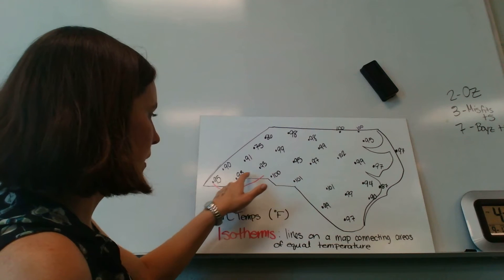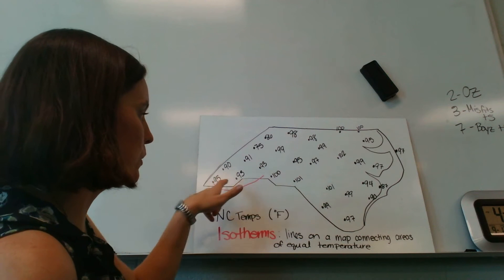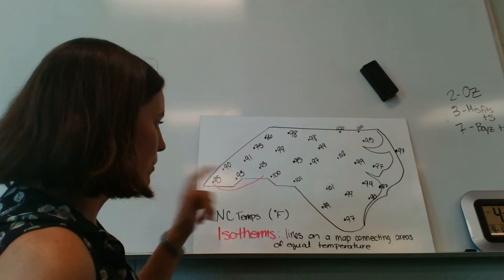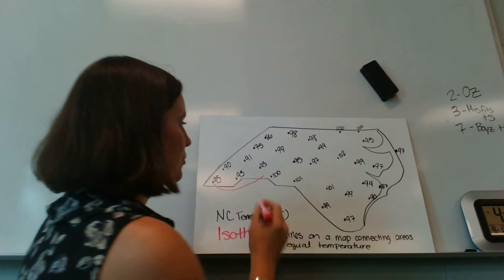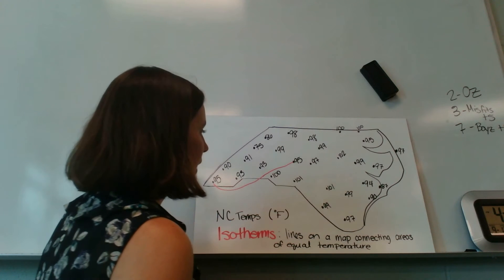Well, I know that there would be an isotherm here between the two 93 degrees because those two are equal temperatures. But I know that 95 goes in between 93 and 100. So I'm going to just go right in between 93 and 100. I'm going to connect to my next 95.